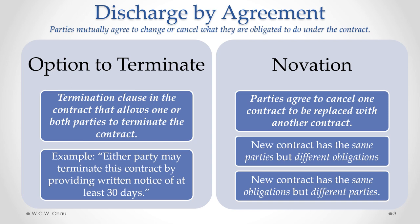Another way to discharge by agreement is called novation. This is where the parties have agreed to cancel one contract and replace it with another. Novation can happen in one of two ways. One way is to have a brand new contract with the same parties but different obligations from the original. Another type of novation is to have a new contract with the exact same obligations but different parties — or at least one of the parties can be different.